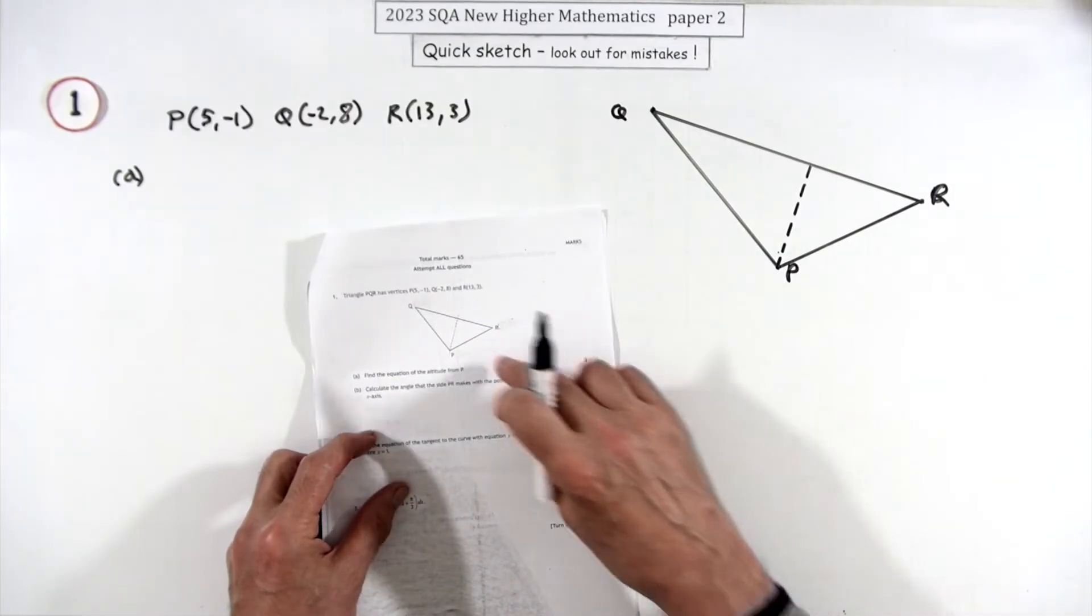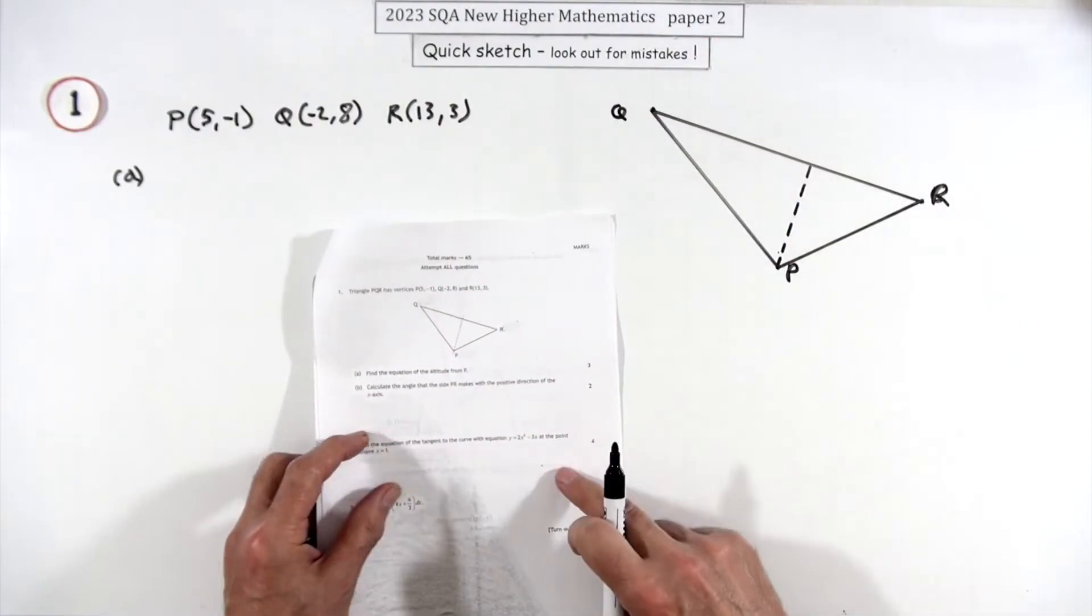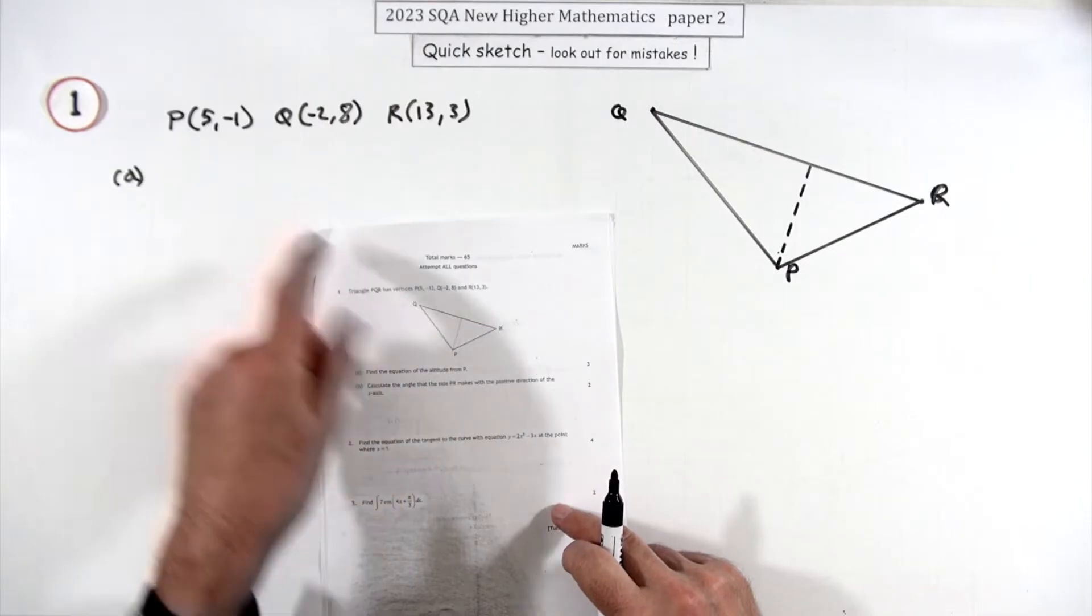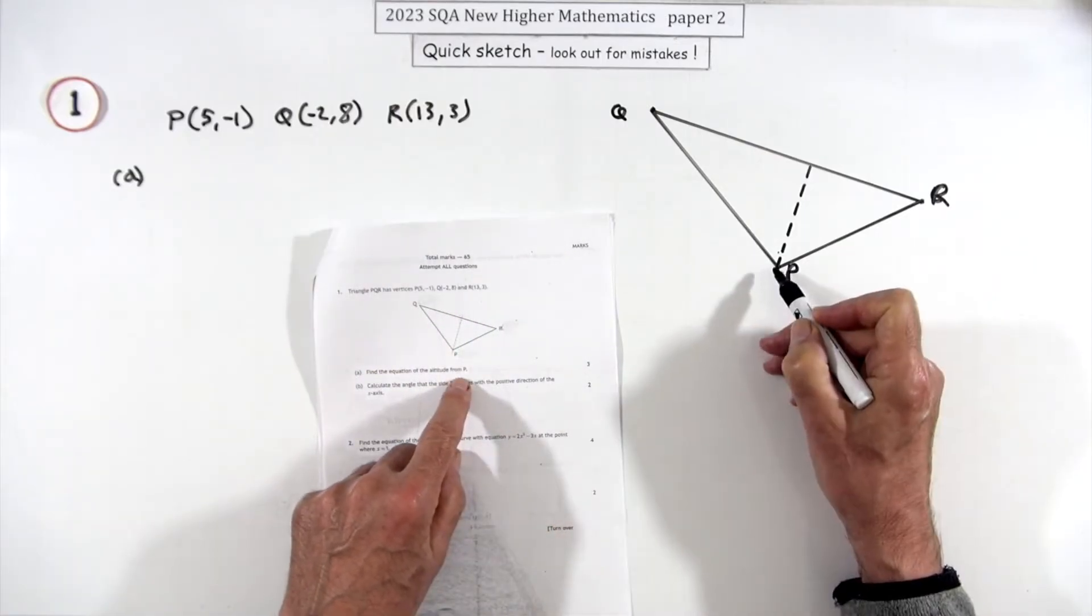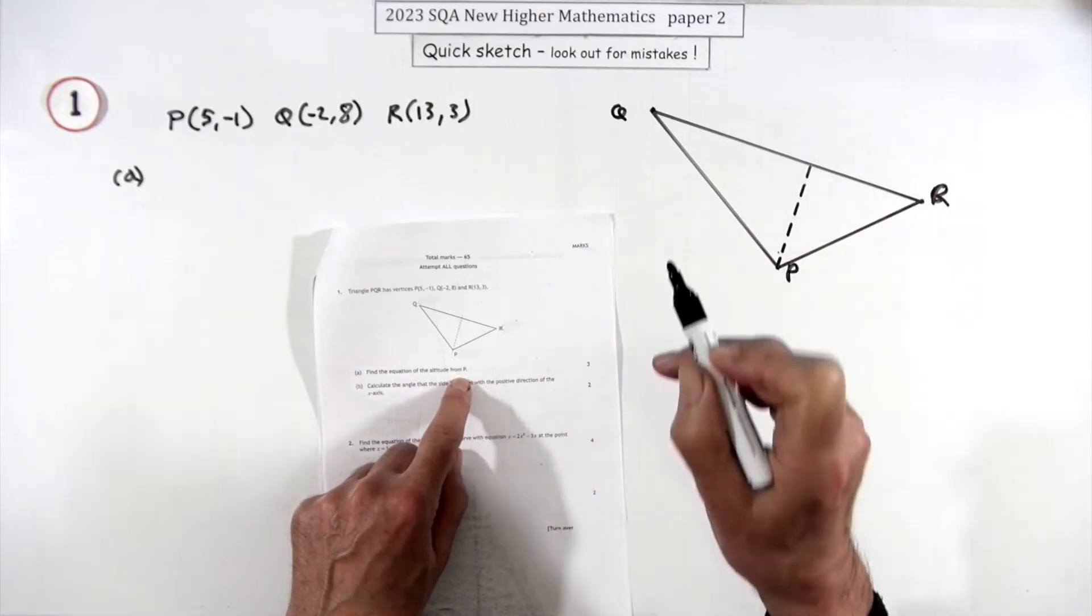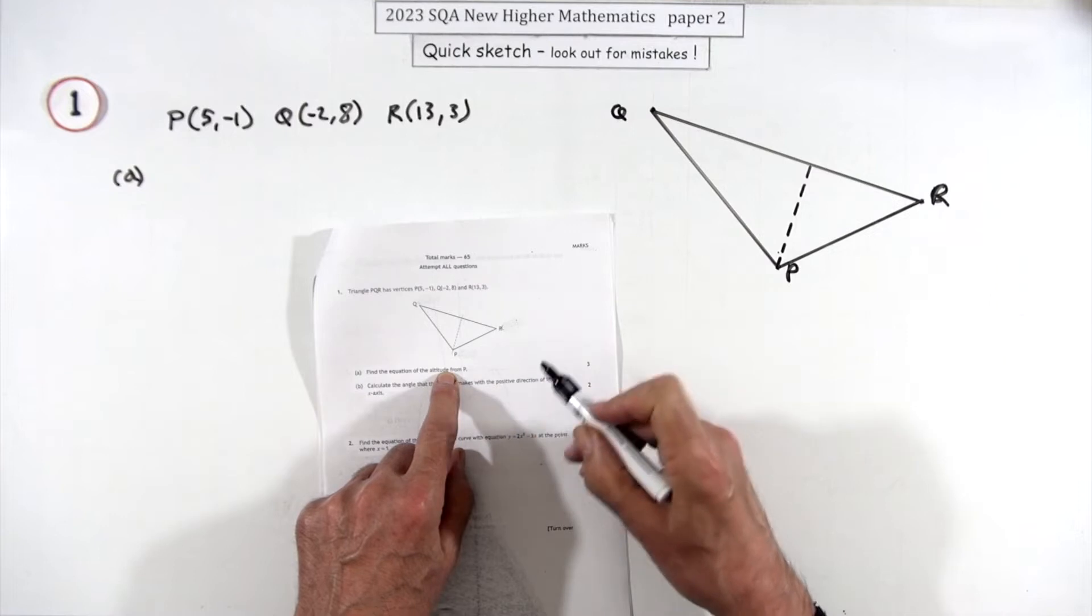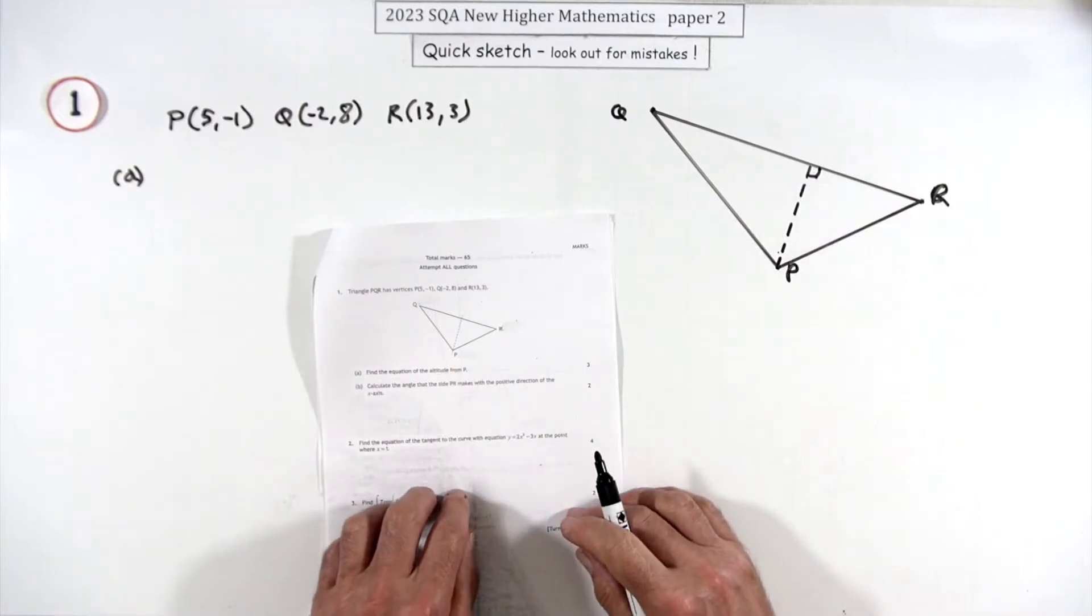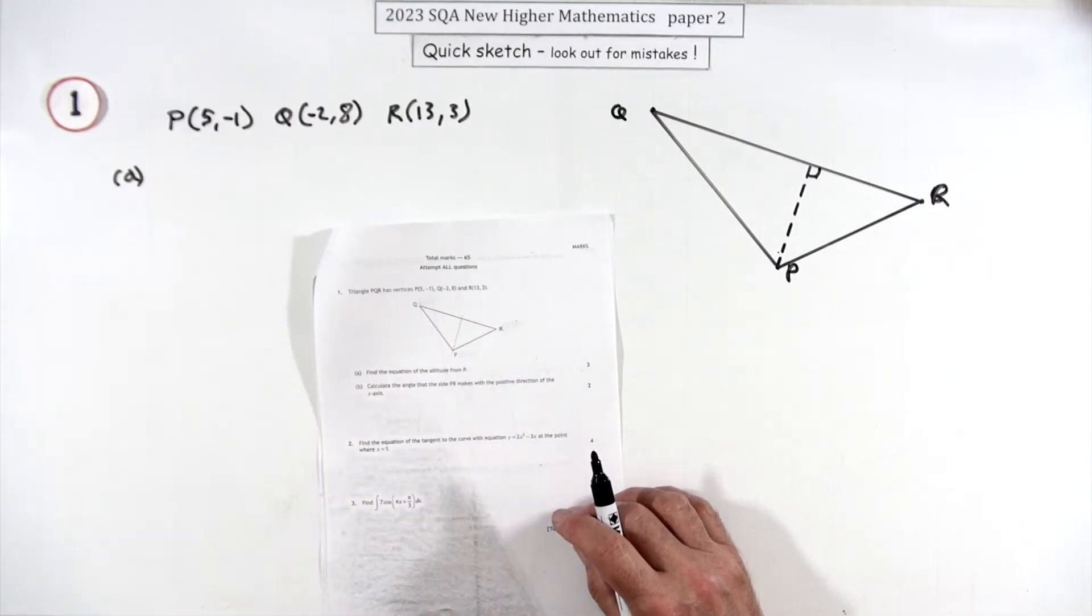Question one, five marks, lines in a triangle. First question in paper two of the 2023 higher maths. You're given this triangle PQR with coordinates. Find the equation of the altitude from P. There was a little picture to show you, and it doesn't show the fact that if it's an altitude, that's a right angle. You'd probably remember that by thinking it doesn't look anywhere near the middle.